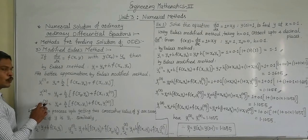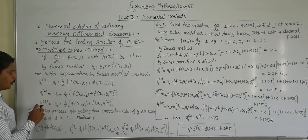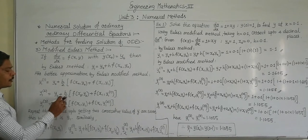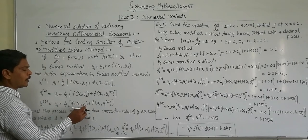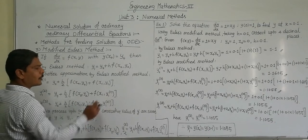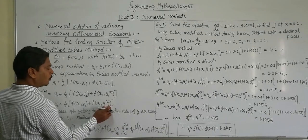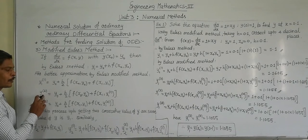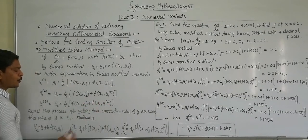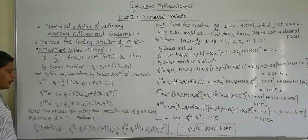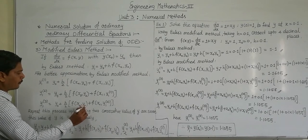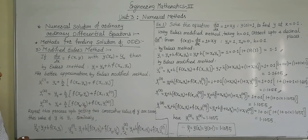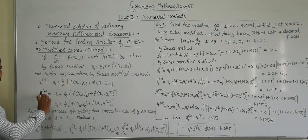For the third iteration, y1 raised to 3 becomes y0 plus h upon 2 into bracket f of x0 comma y0 plus f of x1 comma y1 raised to 2. We continue this procedure until two consecutive values become the same, that is, until convergence is achieved.